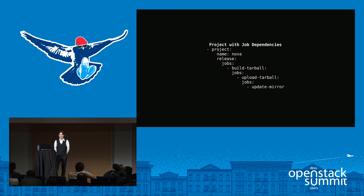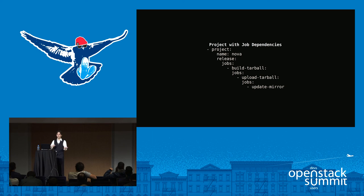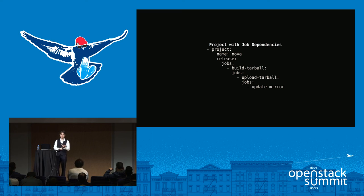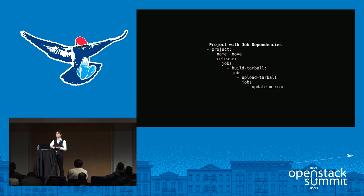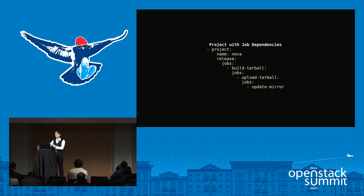Jobs can also have dependencies on each other. In the release pipeline — which runs when somebody tags a repository — you might say: build a tarball for that repository, upload it to tarballs and PyPI. And if that succeeds, update local mirrors. These jobs only run if the job before them succeeded, so you can build up this pipeline of jobs this way.